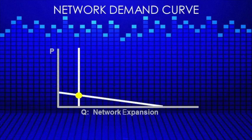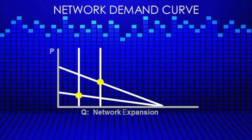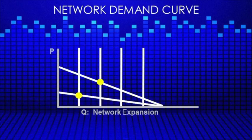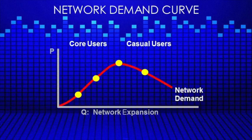Now suppose that you open another gym across town, doubling your network capacity. In a typical market, when you shift supply to the right, the price falls. However, for a network good, the demand curve will increase along with the increase in supply, because a fitness center with two locations is much more attractive to its members than just one. As the network expands, demand continues to increase, but at a diminishing rate. If we connect the equilibrium points from each supply and demand curve, we derive the network demand curve, which slopes upward due to network effects and then downward due to diminishing returns.